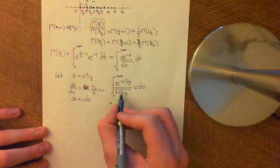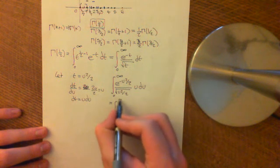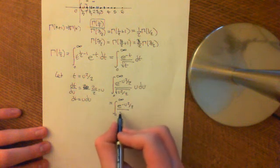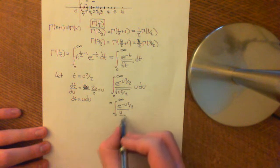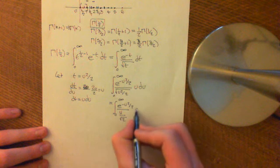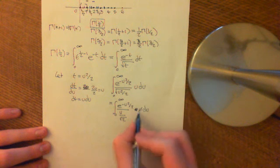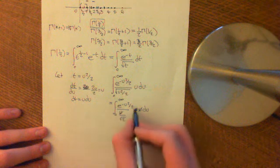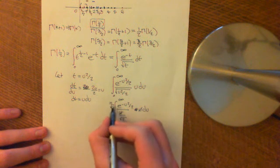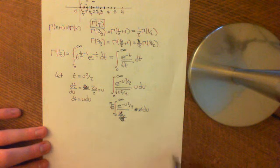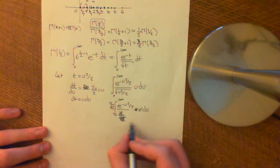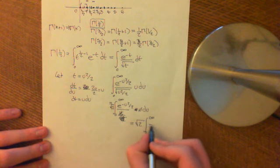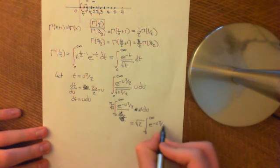Splitting this up, it becomes the integral from 0 to infinity of e to the negative u squared over 2. The square root of u squared is just equal to u, and then divided by the square root of 2, times u du. The u's cancel. Dividing by 1 over the square root of 2 is the same as multiplying by the square root of 2, so we end up with the square root of 2 times the integral from 0 to infinity of e to the negative u squared over 2, du.